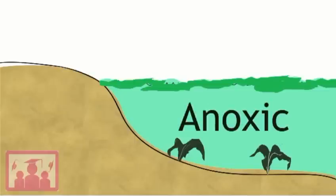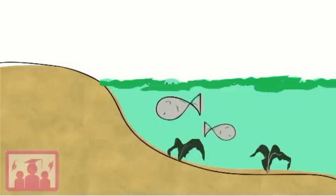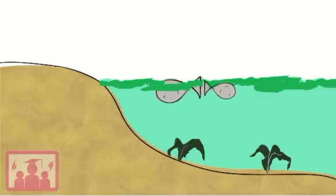If the water turns anoxic, all non-bacterial life in the water, including fish and other animals, will die.